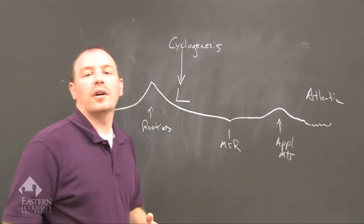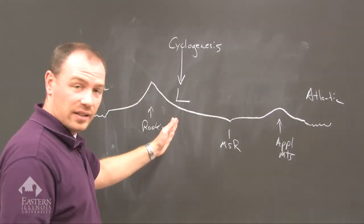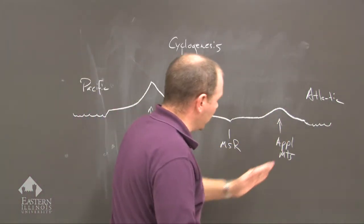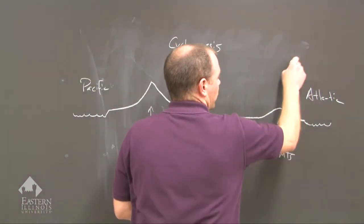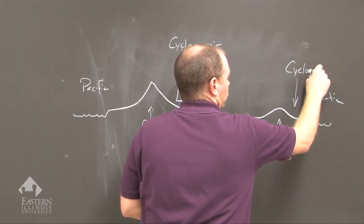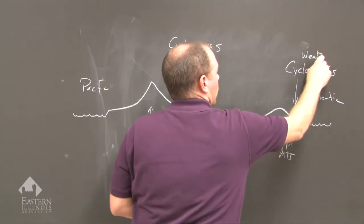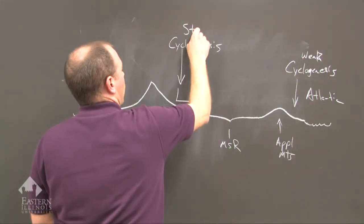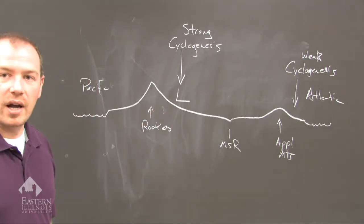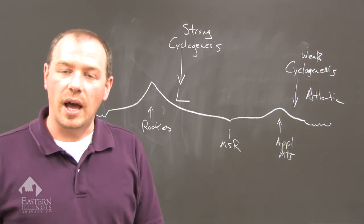Another point of cyclogenesis would be, not as intense as the Rocky Mountain cyclogenesis, but here east of the Appalachian Mountains. This would be another point of cyclogenesis, but this is going to be weak. Strong cyclogenesis east of the Rockies, weak cyclogenesis east of the Appalachian Mountains.